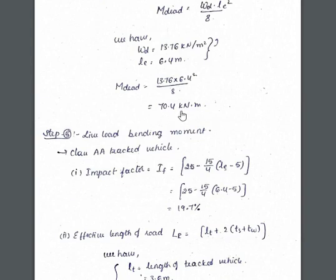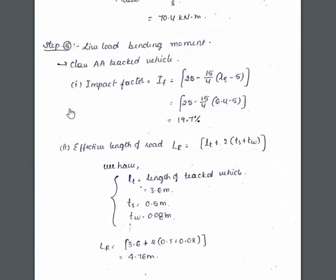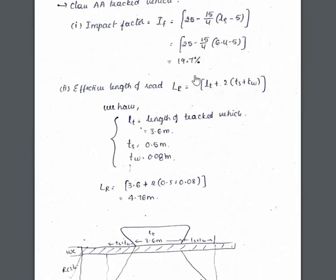Step 5: live load bending moment. For Class AA tracked vehicle, the impact factor formula is: IF = 25 − 15 × (Le − 5) / 4, where Le is the effective span. Substituting Le = 6.4 m gives an impact factor of 19.7%.